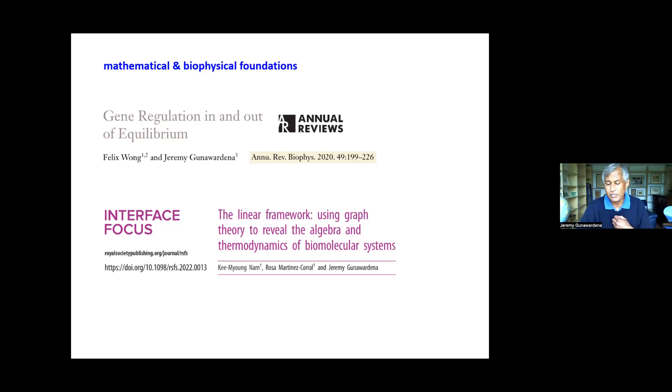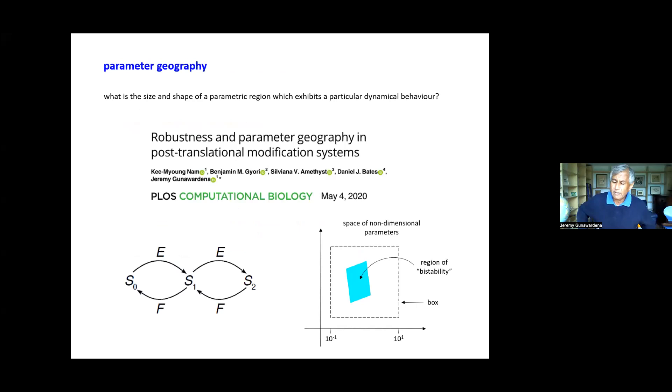I would point to a couple of review papers, in particular one that's going to come out in Interface Focus shortly. As Mercedes mentioned, the thing I wanted to focus on is this question of parameter geography. We call it geography; geometry would be a perfectly reasonable alternative description. Geography has a sort of softer, fuzzier meaning and I think given how little we know about parametric regions that seems appropriate. Broadly speaking, this refers to the question of what do regions of parameter space look like in which a particular kind of dynamical behavior is exhibited?